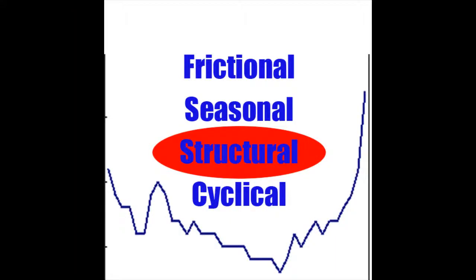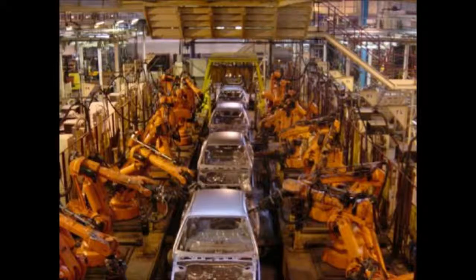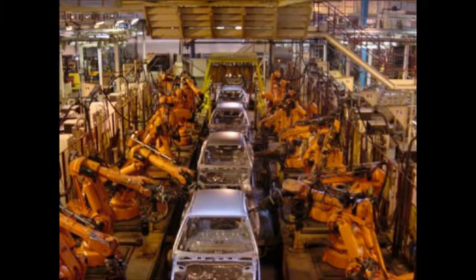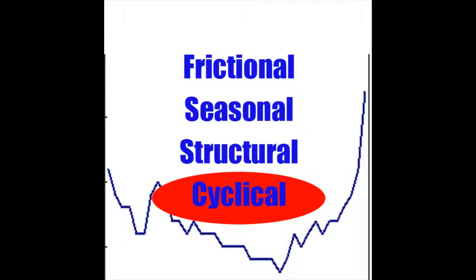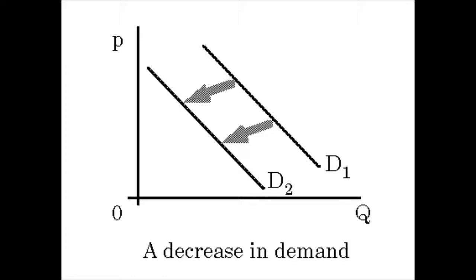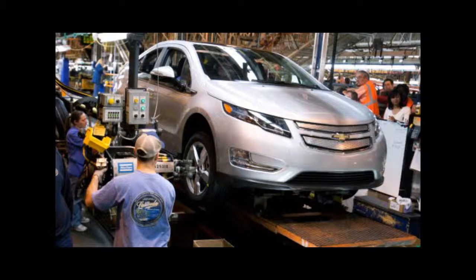Another type of unemployment is structural, which is due to a mismatch between people and jobs. You might be working in a factory and get replaced by a computer because it's simply more efficient. The last, and possibly the worst type, is cyclical. This is due to a decrease in demand for a job, making businesses decrease production, causing people to lose jobs.